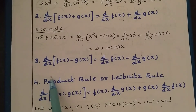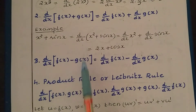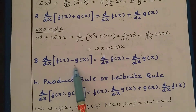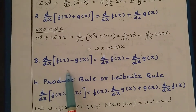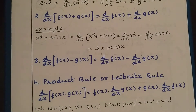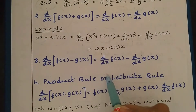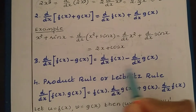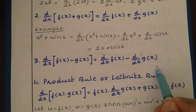The third rule is similar to the second but with a minus sign: d/dx of [f(x) − g(x)] = d/dx of f(x) − d/dx of g(x).